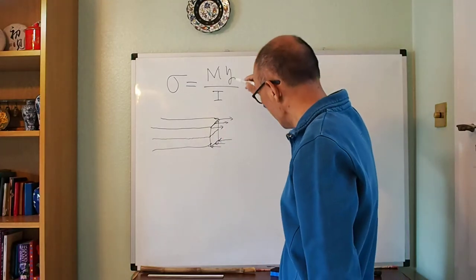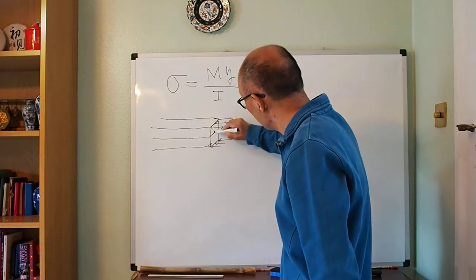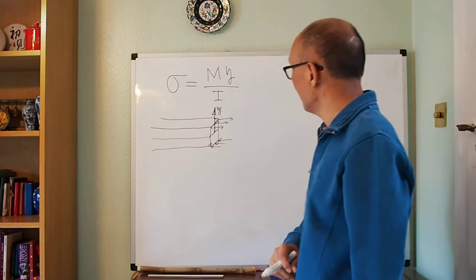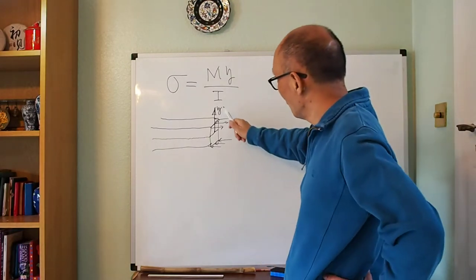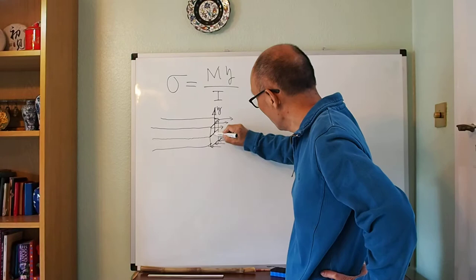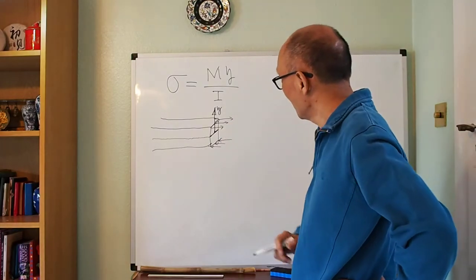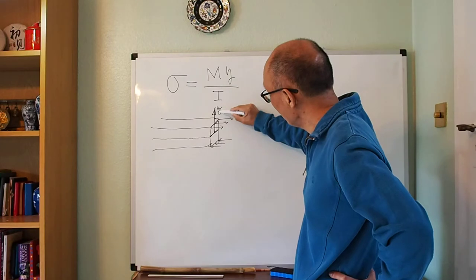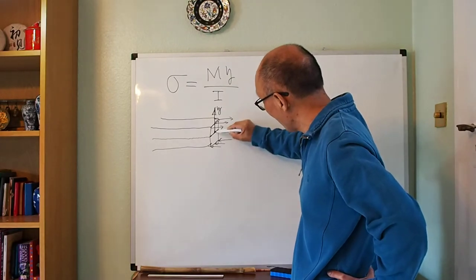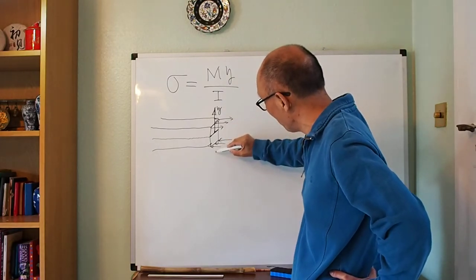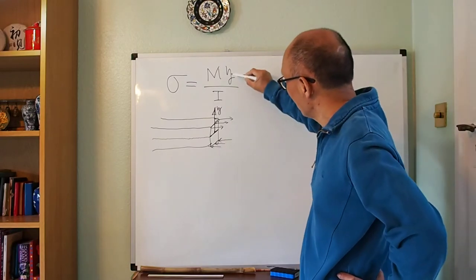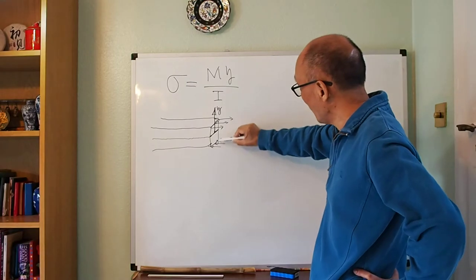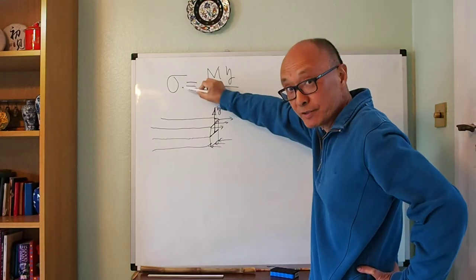That y is the coordinate measured from the neutral axis. Y is positive in the top half, becomes zero at the neutral axis, and becomes negative in the lower part. So positive y gives you a positive tensile stress, and negative y gives you a compressive stress, and zero at the neutral axis.